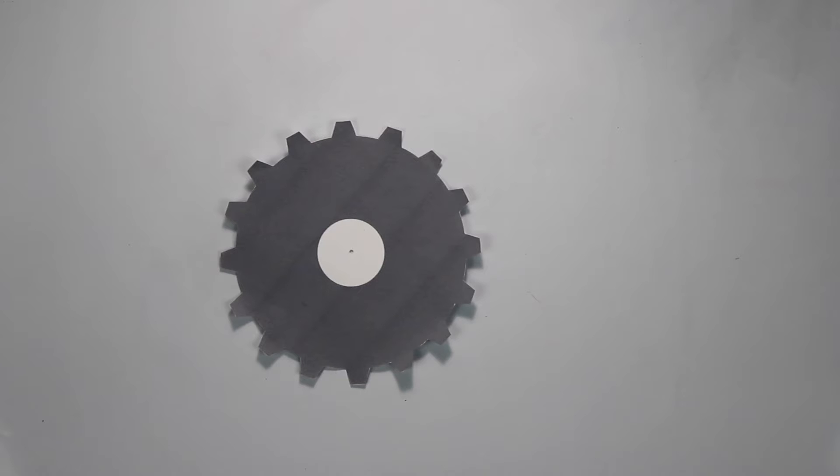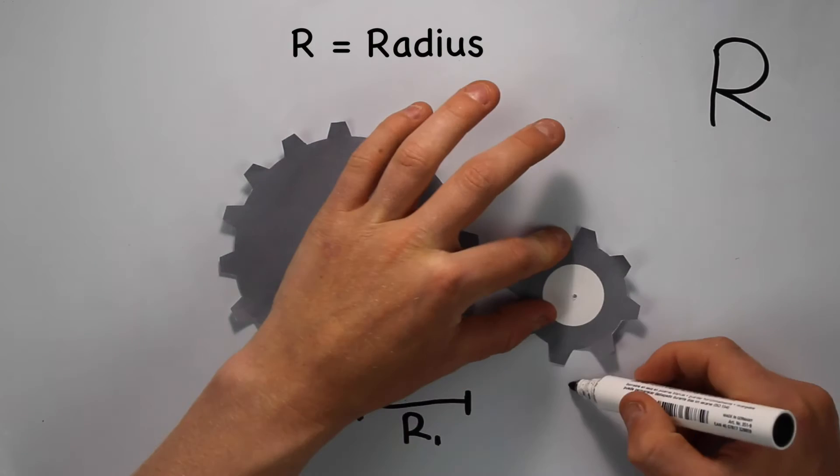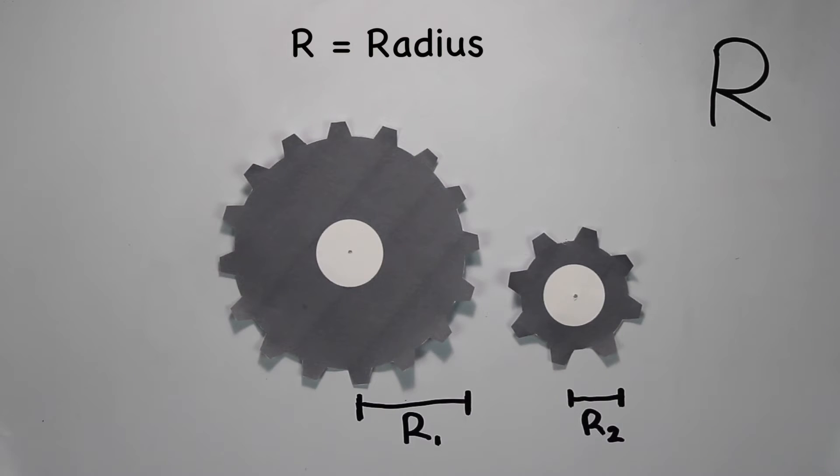The following key terms are important when describing the operation of gears. A gear's radius, which is the distance from the centre of the gear to the end of the gear. For example, we can see that gear 1 has a bigger radius than gear 2.